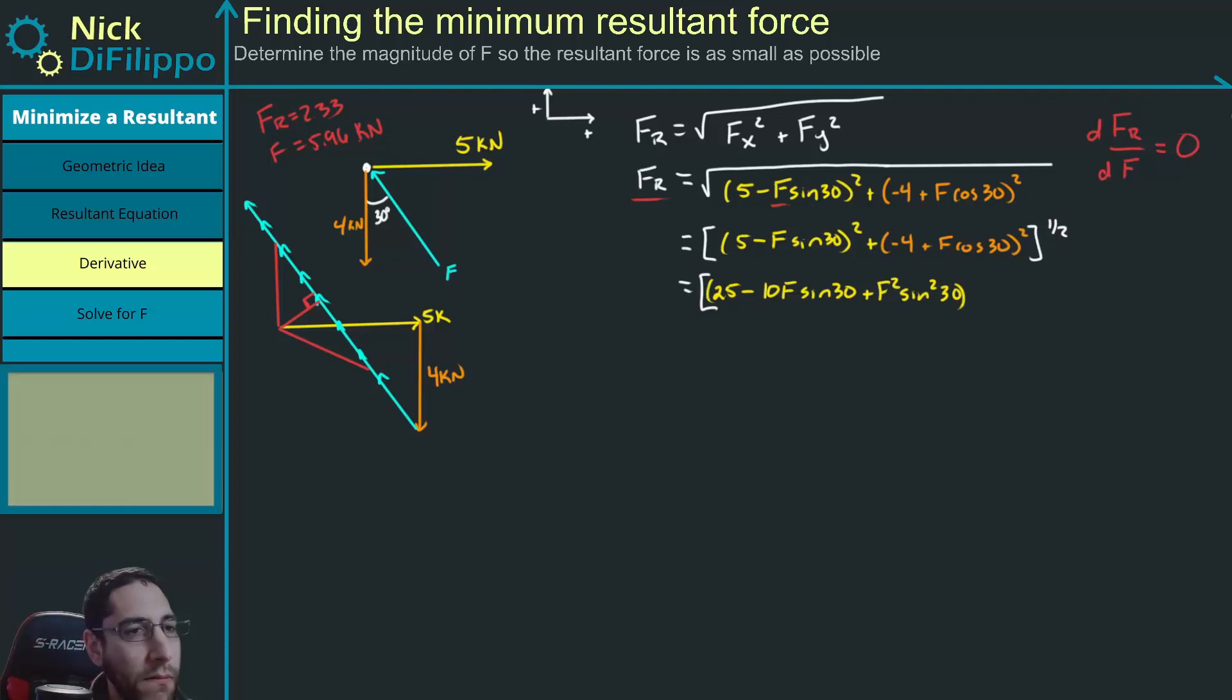And then plus 16 minus 8F times the cosine of 30 plus F squared times the cosine squared of 30. And that's to the one-half. So it's just an equivalent expression right now.